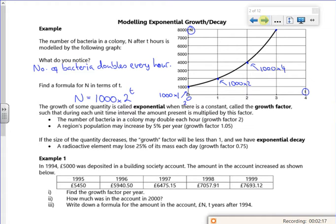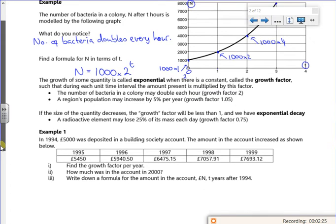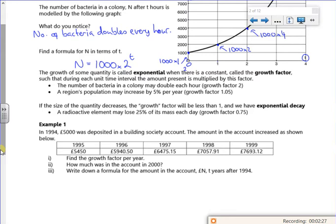When t is zero, it gives me a thousand. When t is one, it gives me two thousand. And t is two gives me four thousand. That's what I was trying to get my head around.